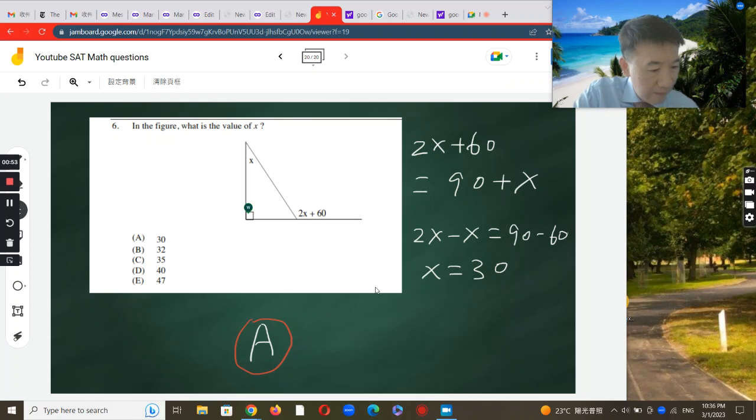The next step is we're going to move x to the left and then move the 60 to the right-hand side. So we write the equation: 2x minus x equals 90 minus 60. And what do we have? This is x equals 30 degrees, which is choice A right here.